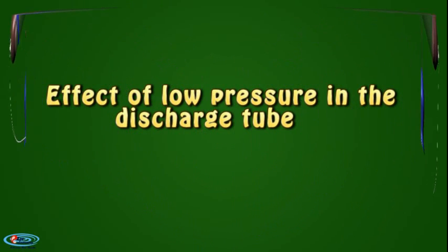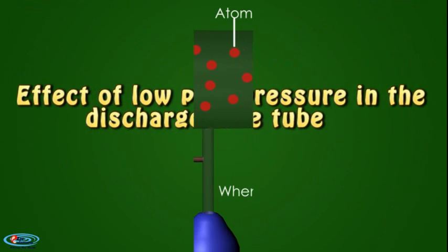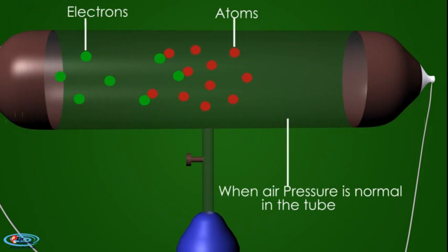Effect of pressure in the discharge tube. When the gas atoms in the discharge tube are at atmospheric pressure, they collide with the electrons, preventing them from reaching the anode. As no electrons reach the anode, no current flows through the discharge tube.